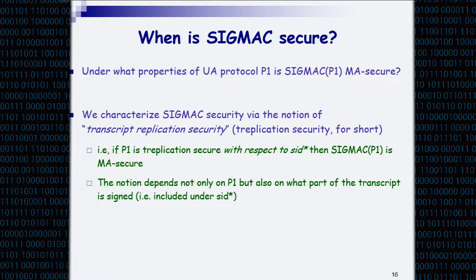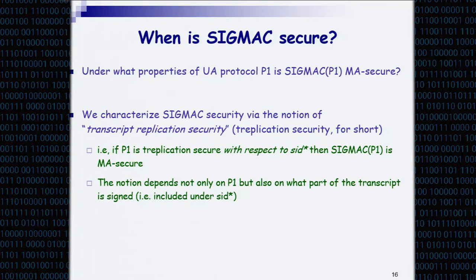Since security depends on what is being signed, we introduced the notion of transcript replication security — or replication security for short — for the type of attacks in which things can go wrong here. I showed that if P1 is a UA-secure protocol that is also replication secure with respect to some subset of the transcript, then this compiler works — it outputs a protocol that is MA secure.